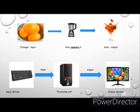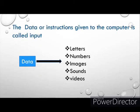We give input to the computer using input devices. Keyboard is an example of an input device. Mouse is an example of an input device. Microphone is also an example of an input device. What is input? The data given to the computer is called input.